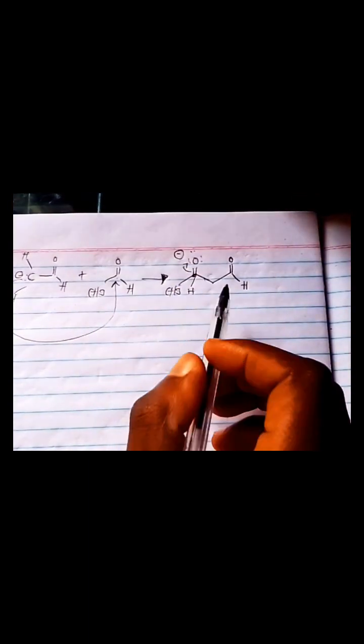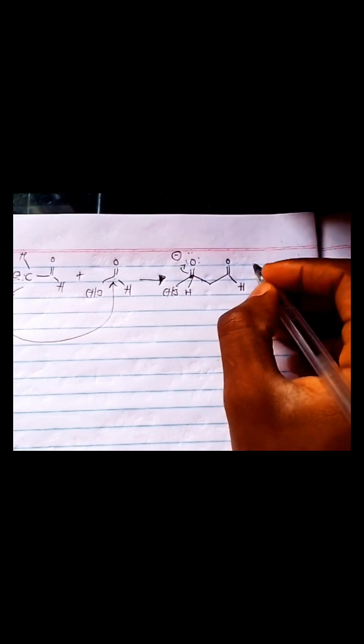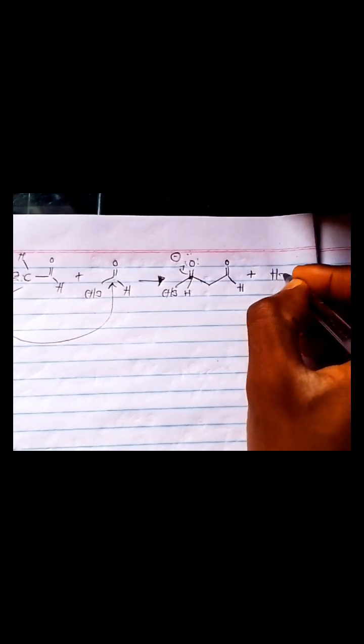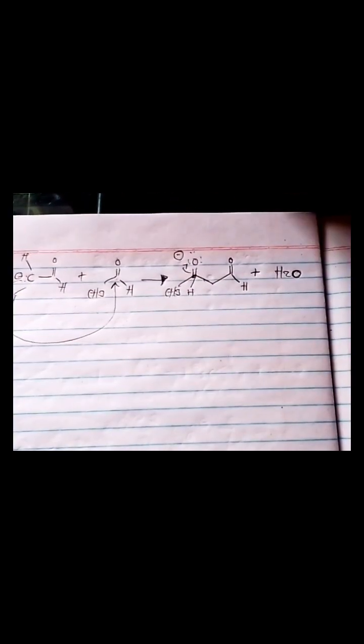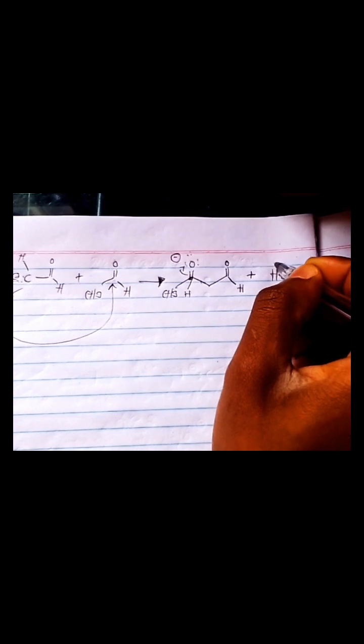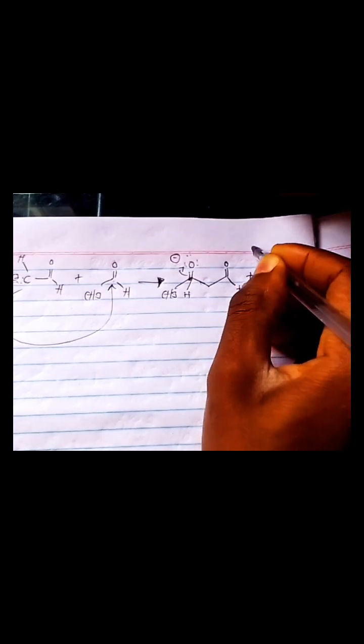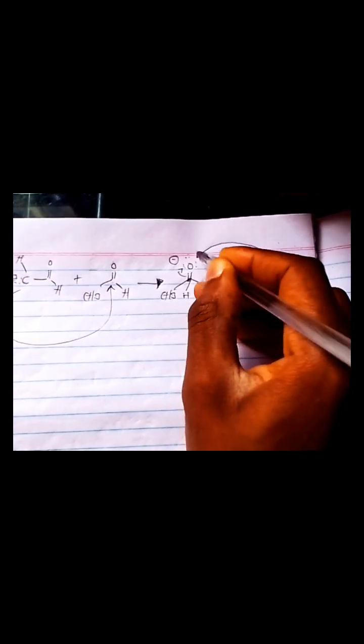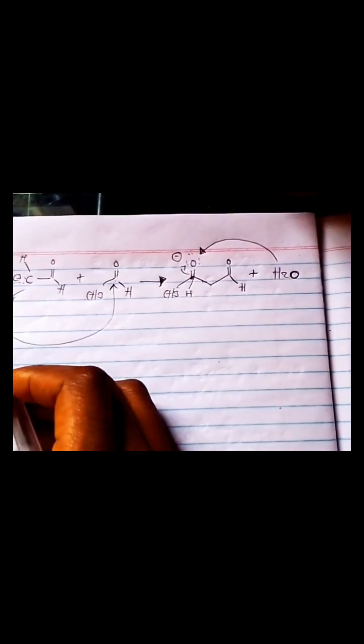When it does that, we'll have a negative charge there. And then one thing we're able to see is that this entire time we had water. And then the water that we created before when we did our step, I think that was step one. When we did our step one. And so one thing you'll be able to see is you can give back the hydrogen. And when you give back the hydrogen, you form this.